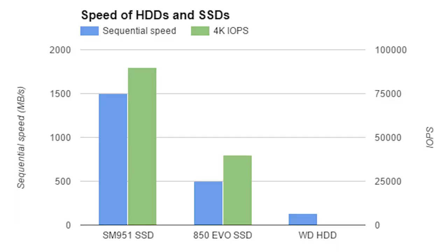On the left of this graph, we have our fast PCI Express SSD. In the middle is our standard serial ATA SSD, and on the right is our hard drive. Sequential speed is measured in blue, and represents how fast large files, like videos, will transfer. The green bars measure 4K input/outputs per second, which represents how quickly small files are accessed and transferred. In this category, the SSDs are so much faster that the results from the hard drive aren't even visible on the graph.